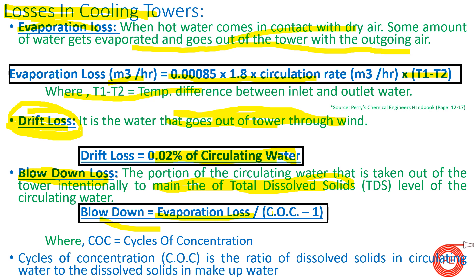Blowdown loss is calculated as evaporation loss divided by (COC minus 1), where COC is cycles of concentration. Generally, cooling tower suppliers offer cycles of concentration around five to seven, meaning a blowdown is required after five or seven cycles. Cycles of concentration is given by the ratio of dissolved solids in circulating water to dissolved solids in makeup water. The total makeup water requirement equals evaporation loss plus drift loss plus blowdown loss.